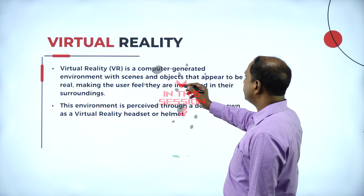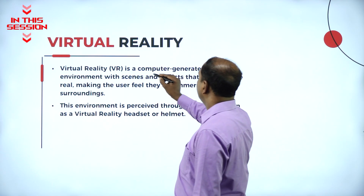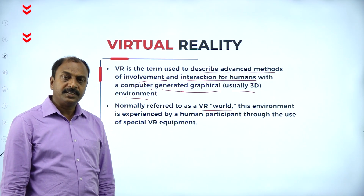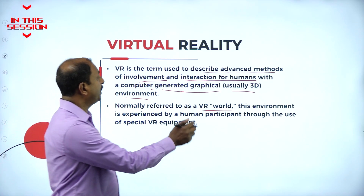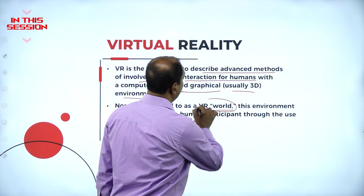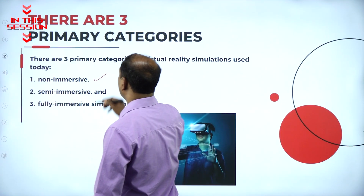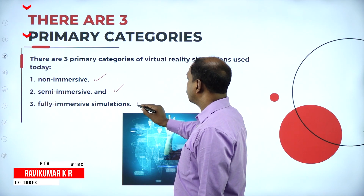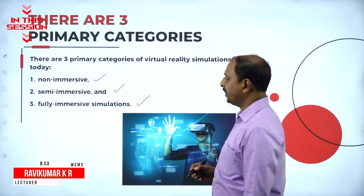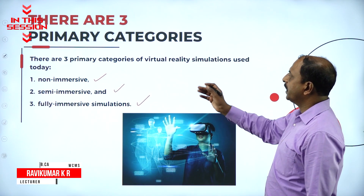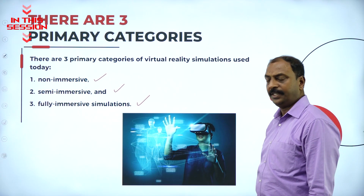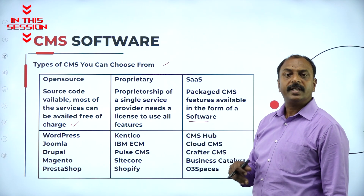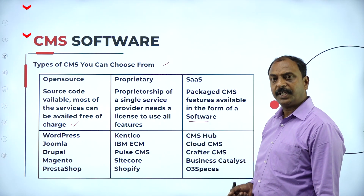Virtual reality is a computer generated environment. Once you experience virtual reality, you are in a separate VR world. There are three categories: non-immersive, semi-immersive, and fully immersive simulation. These correspond to different kinds of CMS software which one can choose for this application.